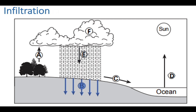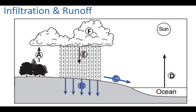Now when water hits the surface, there are a few options. The first option is infiltration, where water goes into the ground. Or that water can become what we call runoff, which means the water stays on the surface of the Earth. The lesson for today is mainly the difference between infiltration and runoff, and the factors that determine whether water goes into the ground as infiltration or stays on the surface as runoff.